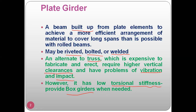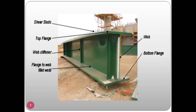Let me show the nomenclature of plate girders. This is what a plate girder looks like — it is a built-up member. On top you can see the top flange, at the bottom is the bottom flange, and the plate is welded to the web. The center portion of the structural element is called the web. On top of the flange you can see some features called shear studs.